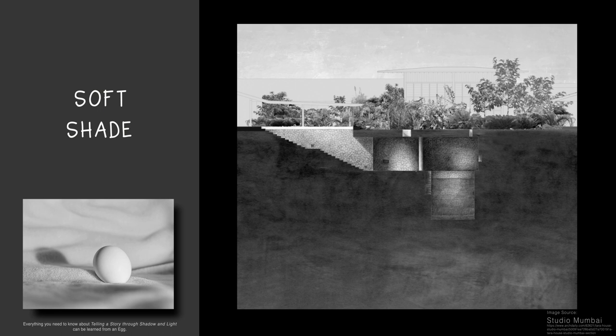This section of the Tara House by Studio Mumbai creates an atmosphere of soft tranquility by rendering the soil in the same shading as the architecture, blending them visually as one. No foundations are shown to further enhance the sense of architecture being integrated with the earth. Notice how this drawing applies the one-third rule, and how the light in the upper third leads our eye downward and into the architecture below.